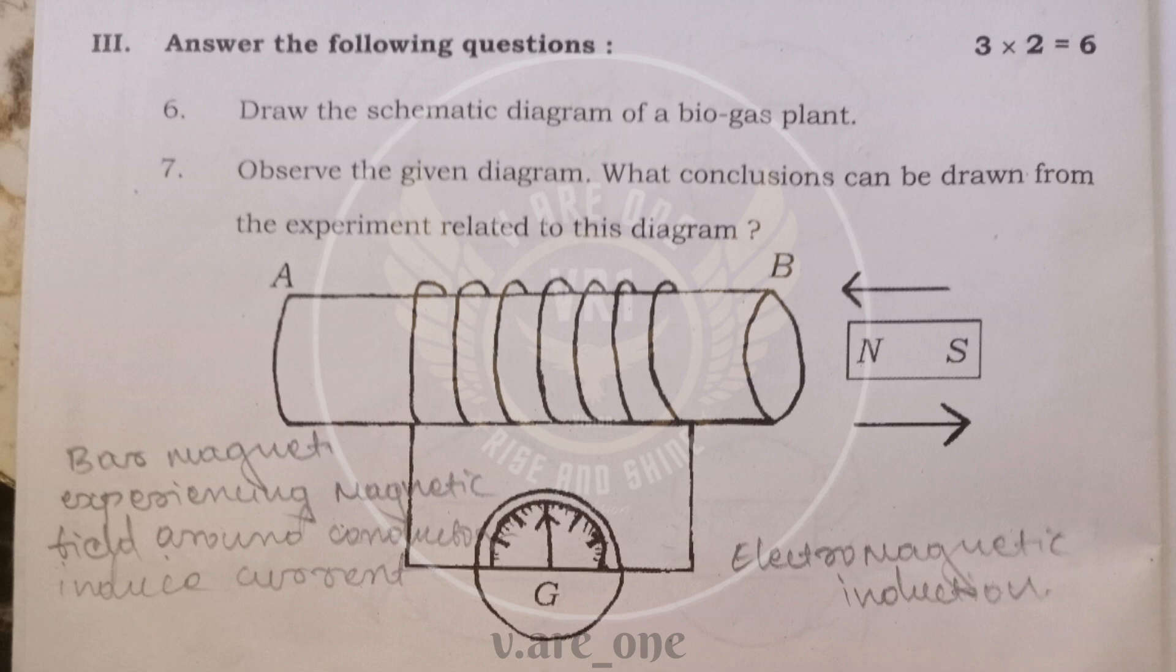And seventh, observe the given diagram and what conclusions can be drawn from the experiment related to this diagram. Here we are taking bar magnet experiencing the magnetic field which is present around the conductor, around the coil. So it is inducing the current and shows the deflection in the galvanometer. And this is an electromagnetic induction.